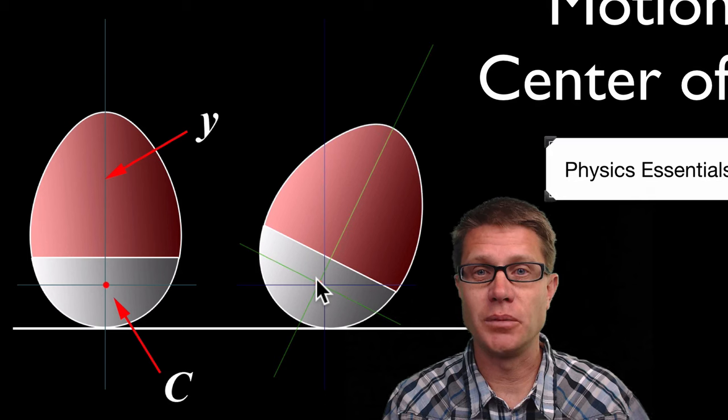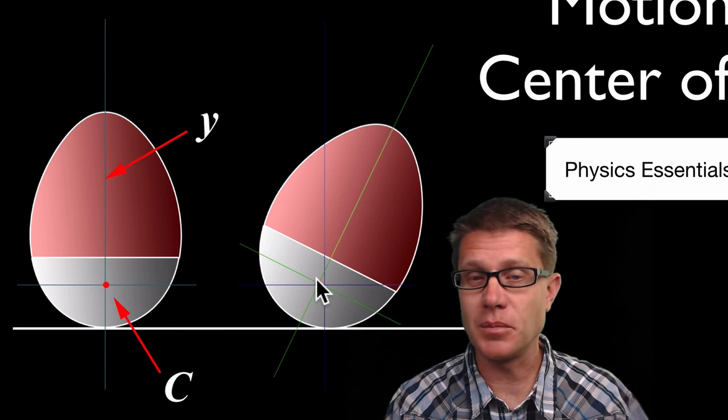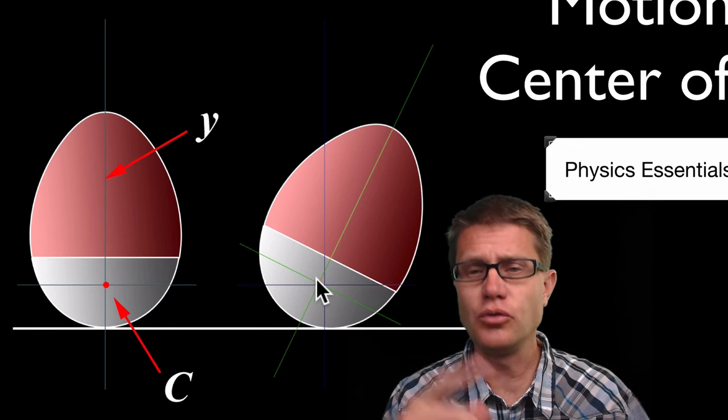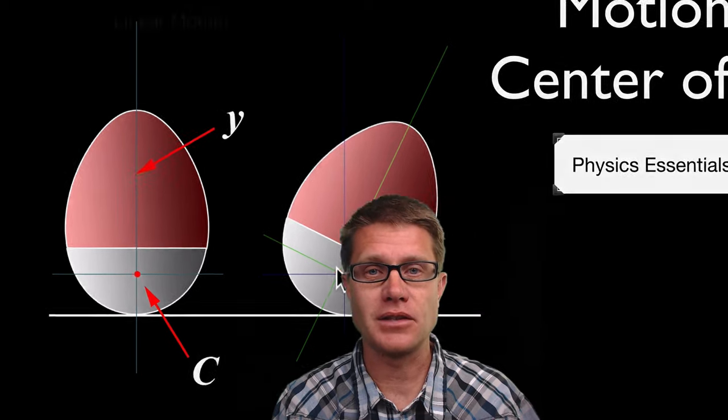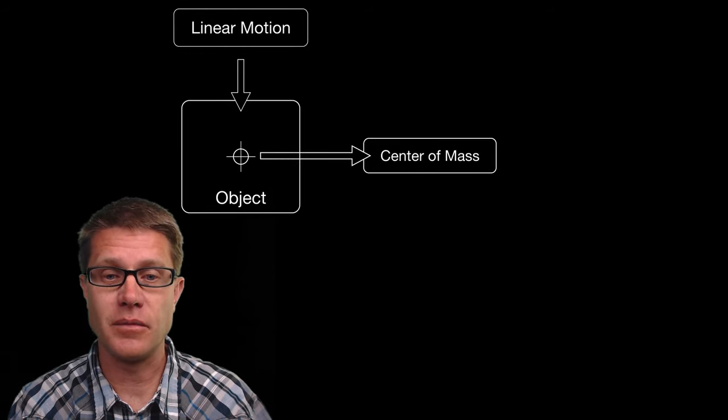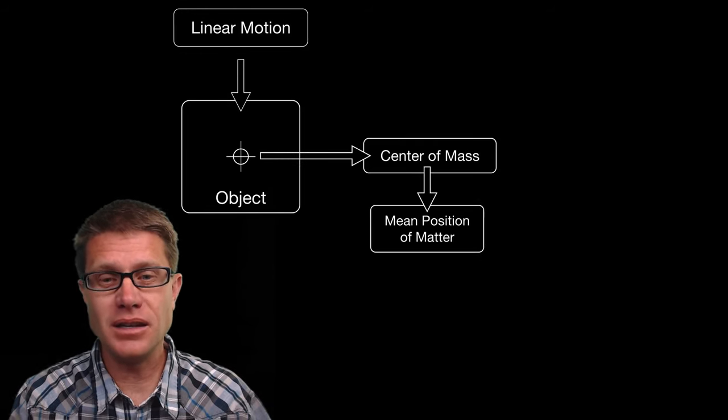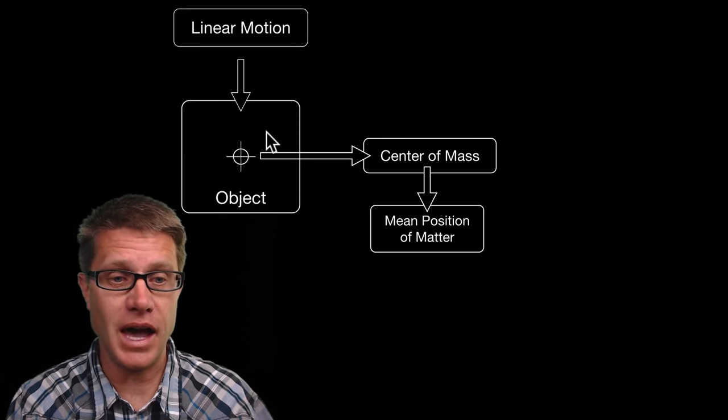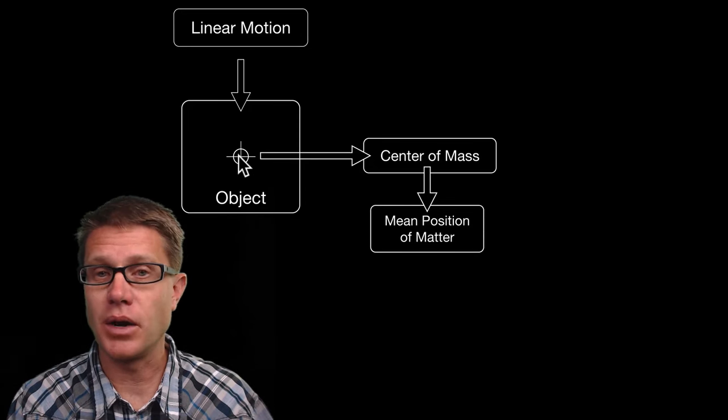Another fun thing to do with weebles was to throw them or spin them in the air. They would do this kind of a looping action, and that is because they are revolving around that center of mass. So when you are measuring linear motion or change over time, what you really have to do with an object is find its center of mass. That is going to be the mean position of the matter, the average position of the matter.